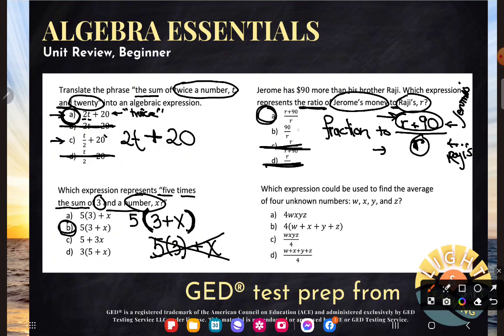And the correct answer is A. And again, don't pick B because B just says Jerome has $90, not 90 more than his brother, just $90. Awesome. Last one.